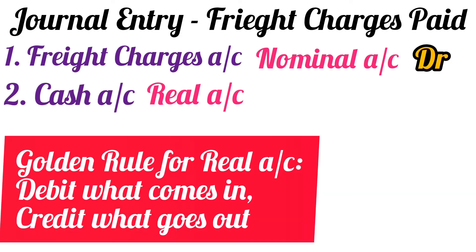The golden rule for real accounts is: debit what comes in, credit what goes out. When we pay freight charges in cash, the cash goes out of the business. Hence the cash account will be credited in this particular transaction.